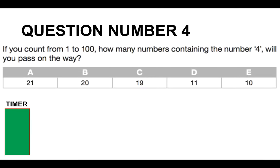Moving on to question number four. If you count from 1 to 100, how many numbers containing the number four will you pass on the way? A, B, C, D or E.